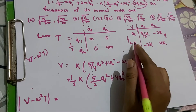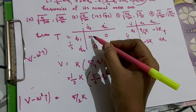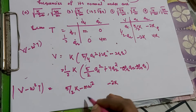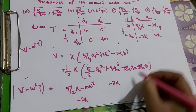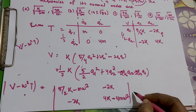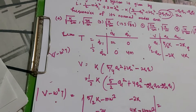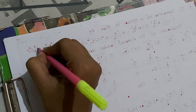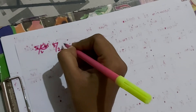So V − ω²T = [(5/2)k − mω², −2k; −2k, 4k − 4mω²] = 0. We multiply the diagonal elements and subtract the product of off-diagonal elements. Expanding: (5/2 k − mω²)(4k − 4mω²) − (−2k)(−2k) = 0, which gives 10k² − 10kmω² − 4mω²k + 4m²ω⁴ − 4k² = 0.